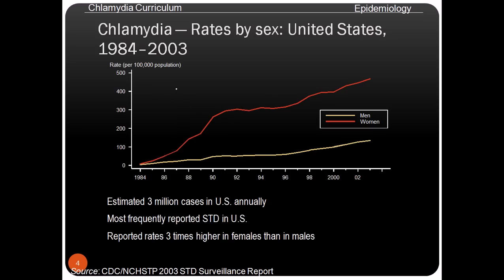Chlamydia is a very dangerous intracellular parasite that can cause severe infections in both males and females, and also in infants and children. Looking at this graph depicting the rate of Chlamydia infection by sex, infection in males is relatively low but in females it is going very high. It is estimated at about three million cases in the US annually, making it the most frequently reported STD in the US.